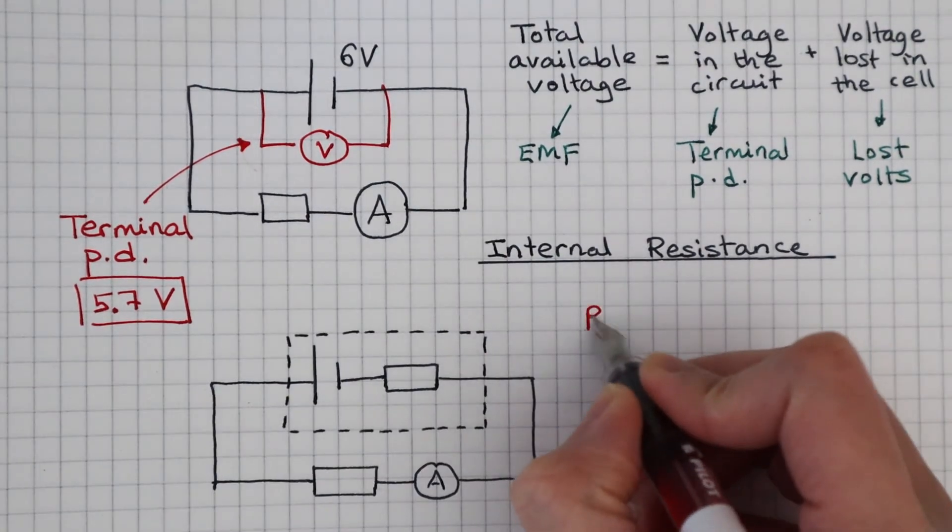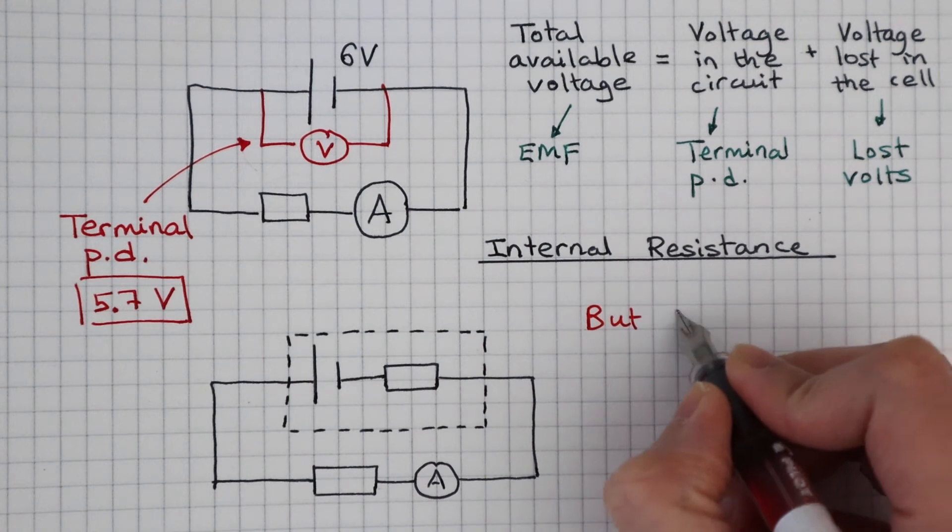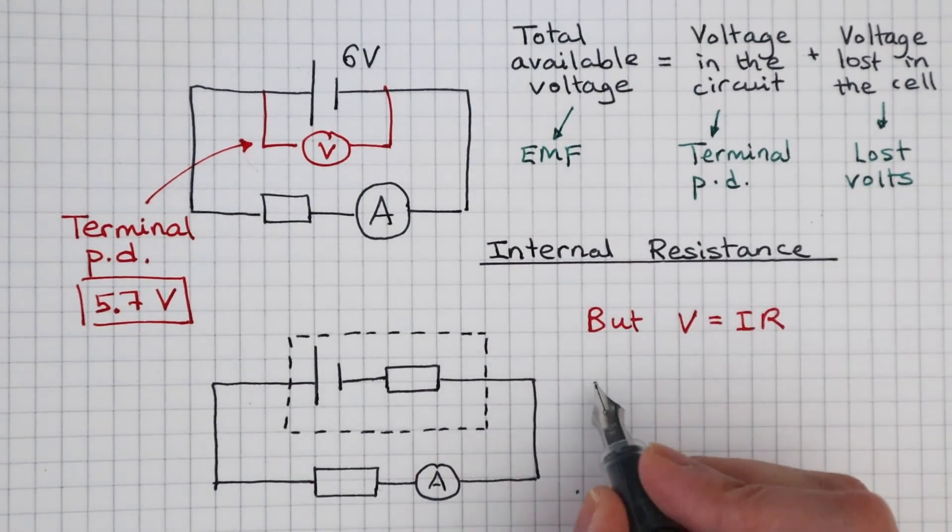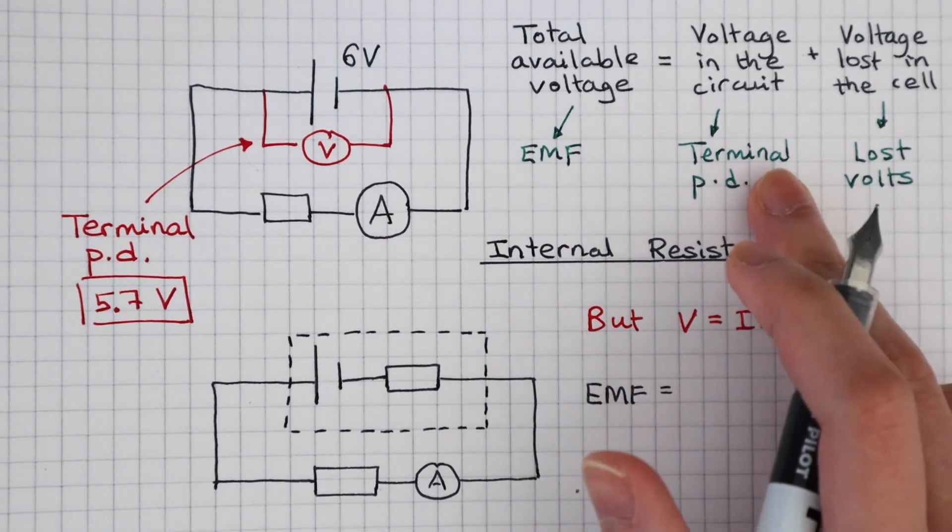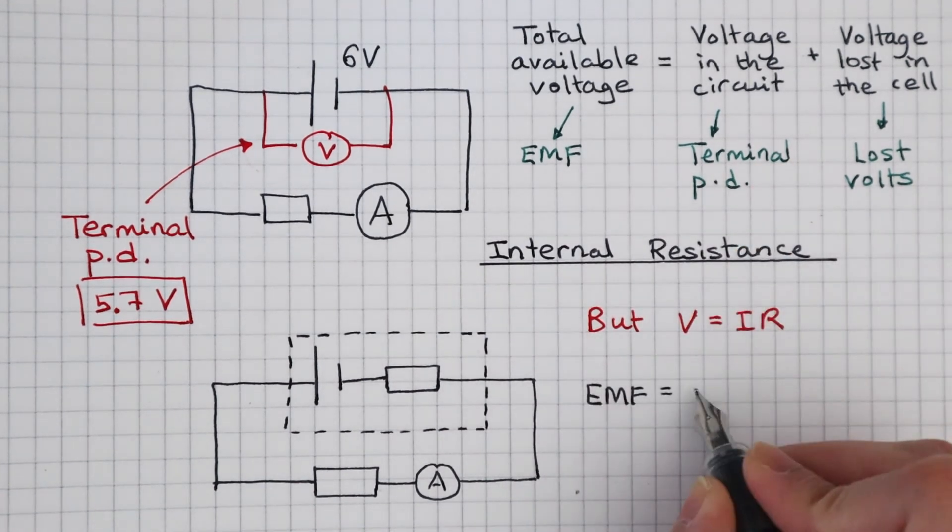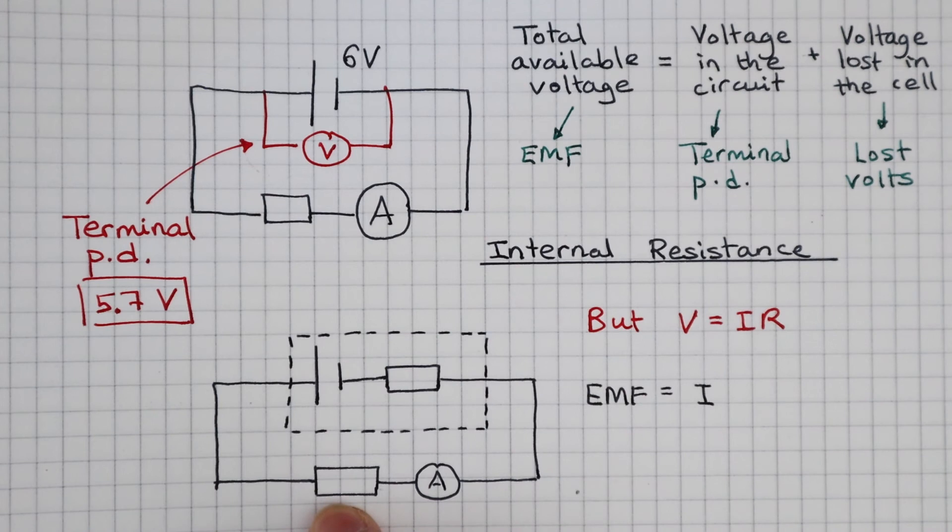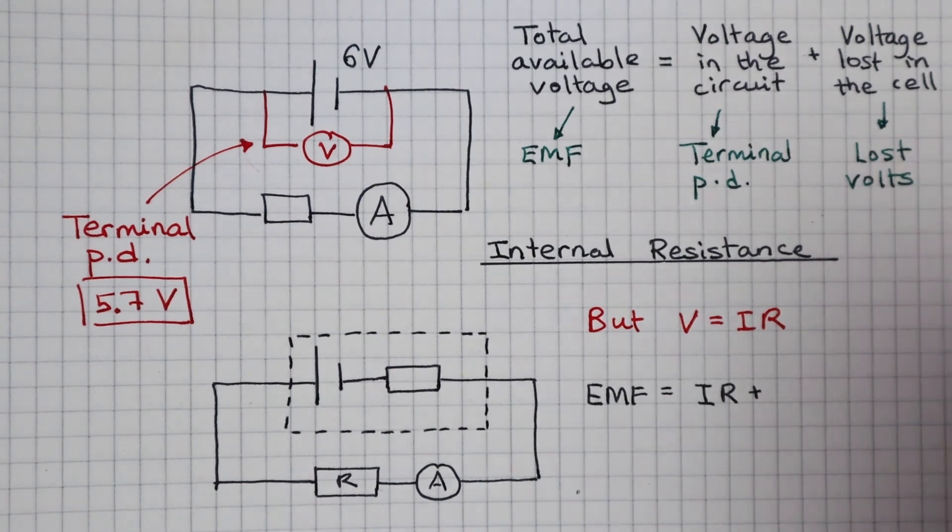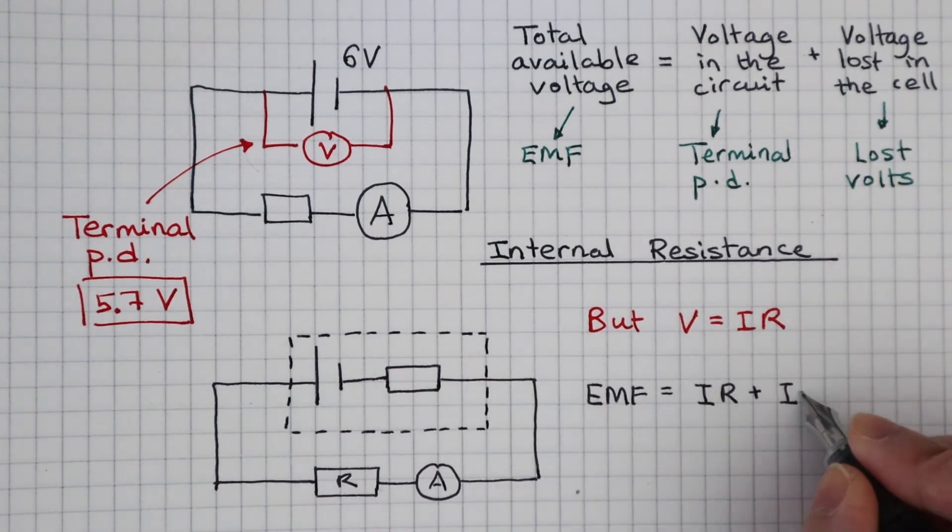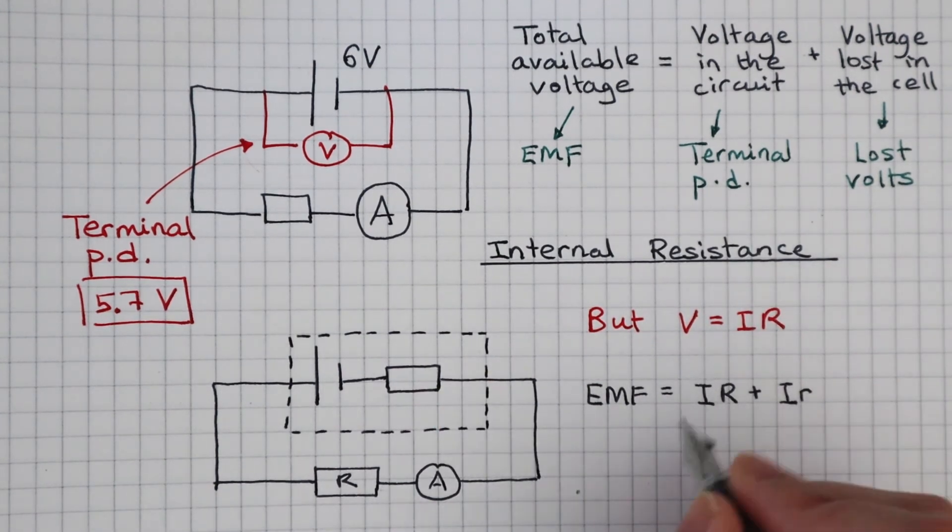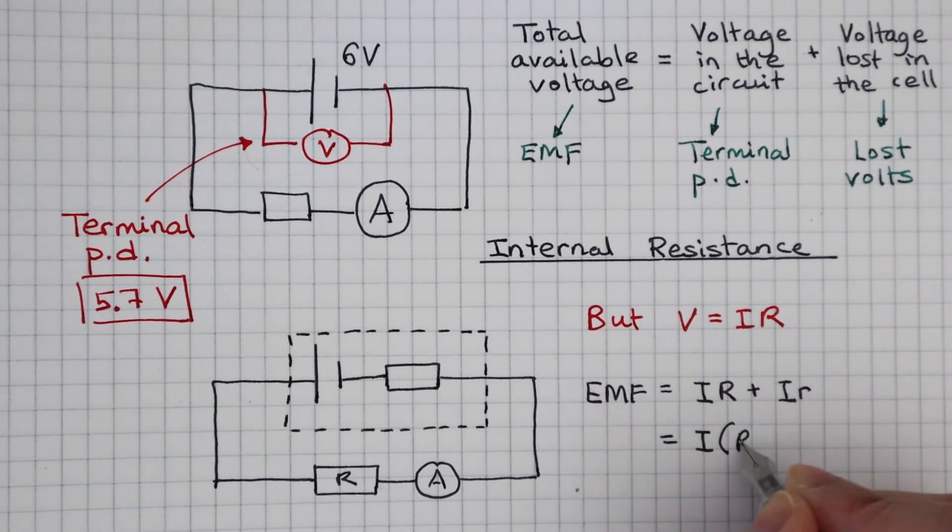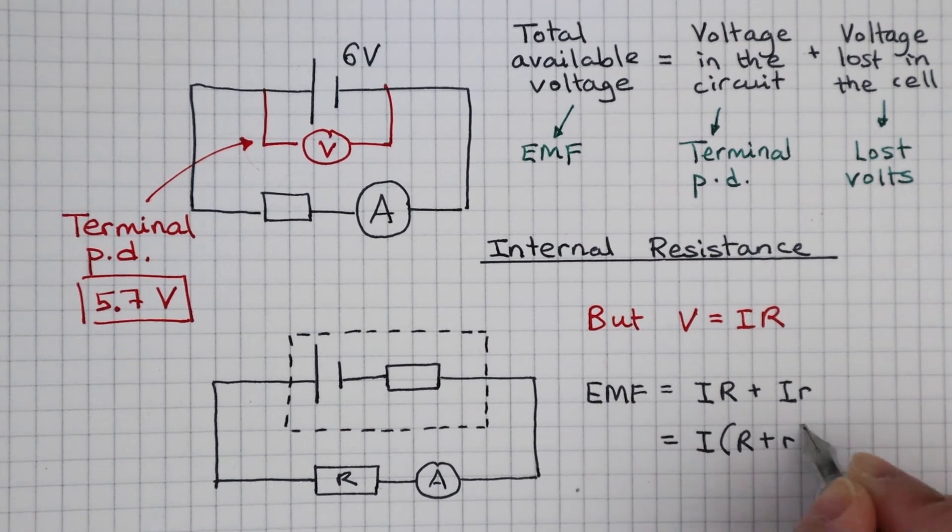And don't forget, voltage is equal to current times resistance. So the EMF is equal to the current in the circuit times the load resistance, capital R, plus the current times internal resistance. We can factor out current to get EMF is equal to current times the load resistance plus the internal resistance.